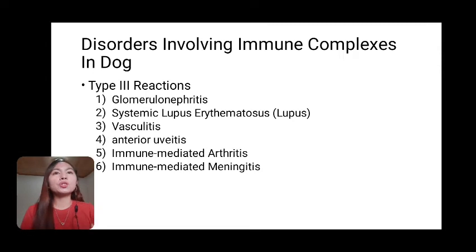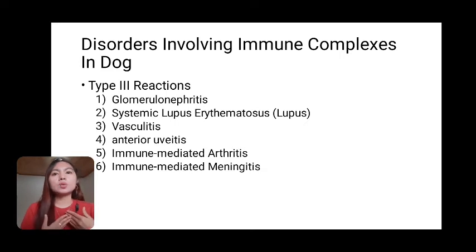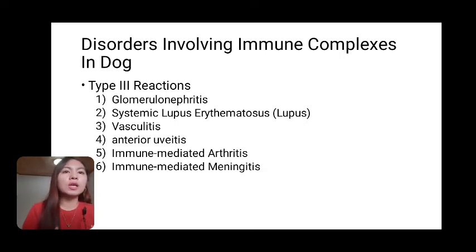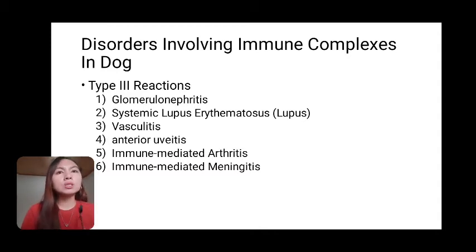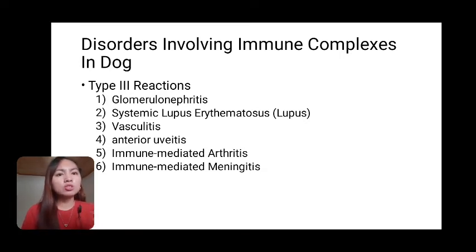Next, disorders involving immune complexes in dogs. This is a type 3 reaction that occurs when antibodies bind to persistent antigens, creating immune complexes. There are several types: glomerulonephritis, systemic lupus erythematosus, vasculitis, anterior uveitis, immune-mediated arthritis, and immune-mediated meningitis.